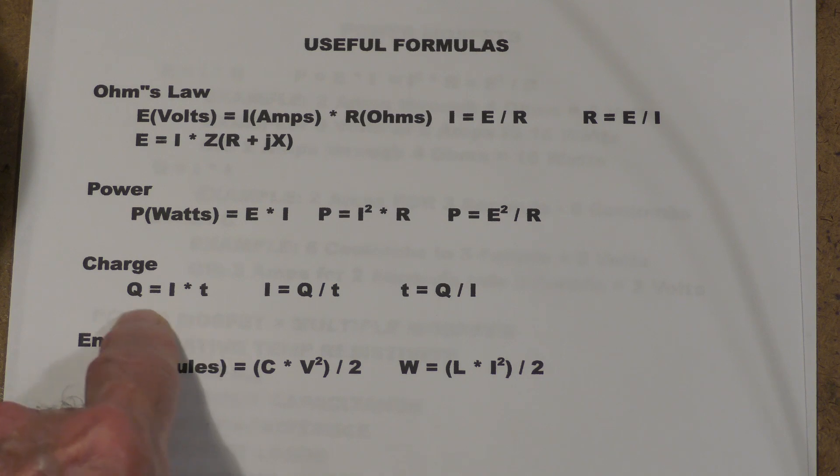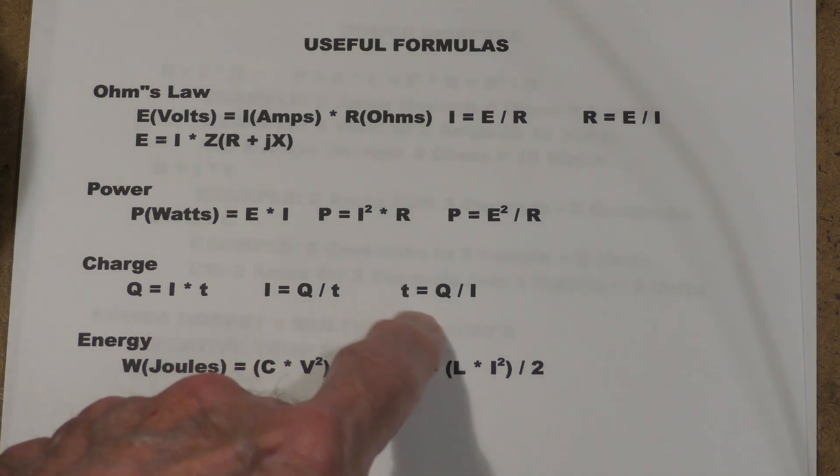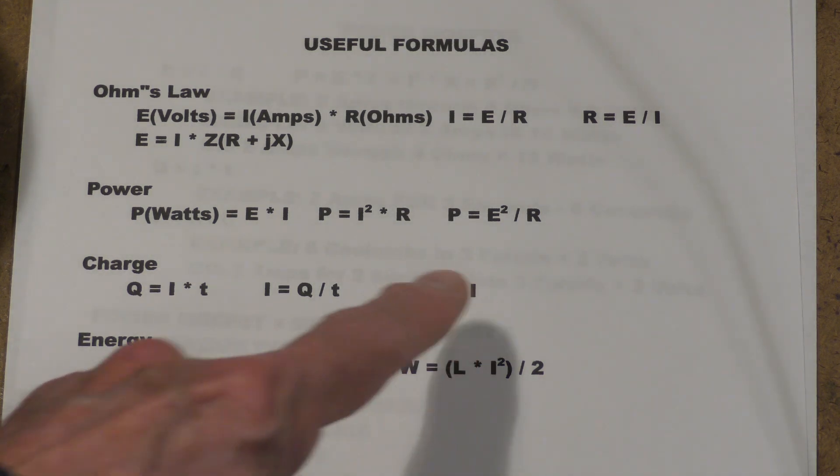Remembering what charge is, it's just current over a period of time. In other words, charge is the accumulation of coulombs by flowing amperes for time in seconds, or I equals Q over t, or t equals Q over I.